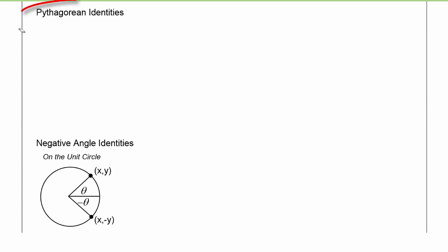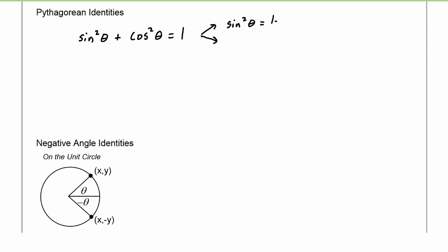Next up we have the Pythagorean identities. We know we have sine squared of theta plus cosine squared of theta is equal to one. Now from that identity, you can write this in two very useful forms: one where we solve for sine squared and one where we solve for cosine squared. An equivalent form of this identity is to say that sine squared of theta is equal to one minus cosine squared of theta, or cosine squared of theta is equal to one minus sine squared of theta.